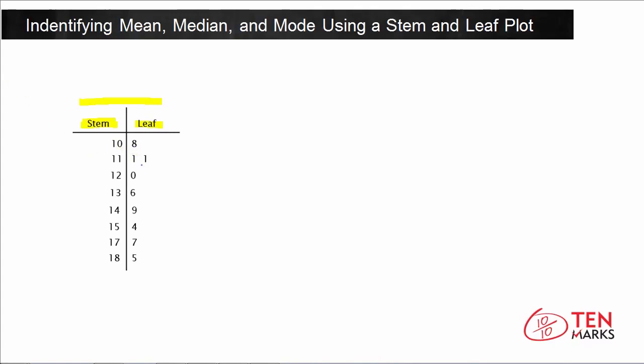Anytime you see two digits in the leaf, it means that there are two data points that have the same exact value, or they have the same stem. For example, this could be 111 appearing twice, and then something like 112 — which would go in the same row because the first two digits are the same for all of these numbers.